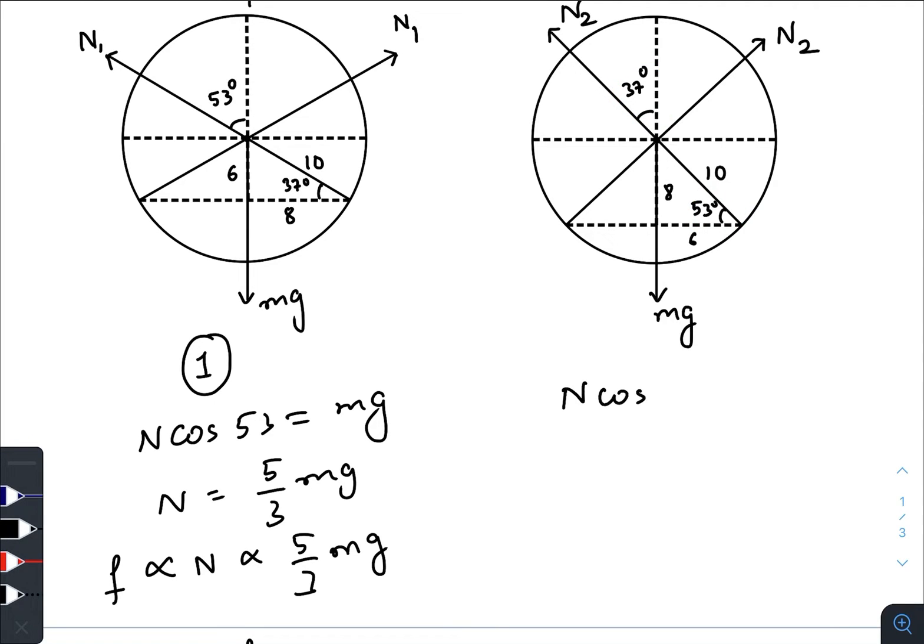N2 cos thirty-seven equals mg. N2 will be 5/4 mg.